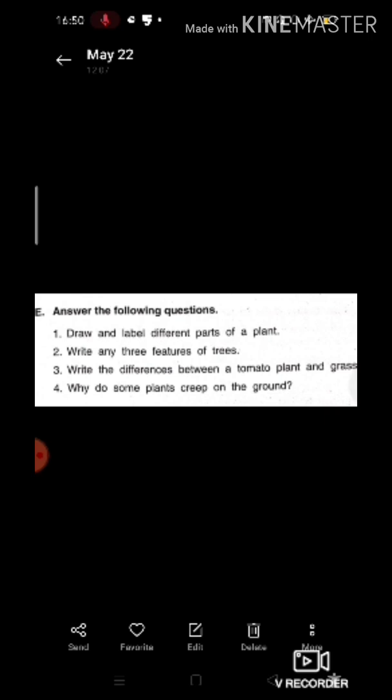Now question number 3, write the differences between a tomato plant and grass. Now students, you all must know that which type of a plant is a tomato plant and grass. A tomato plant is a herb and grass is a creeper.